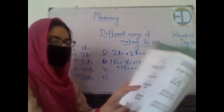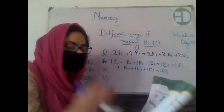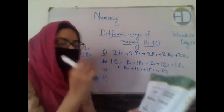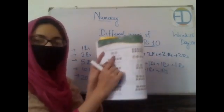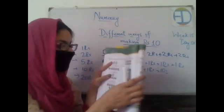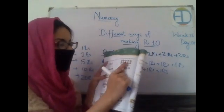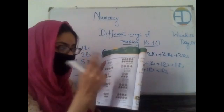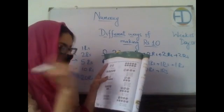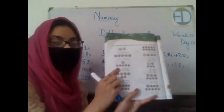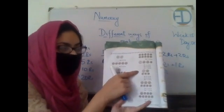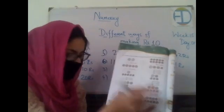Please open your book to page 72. The topic says: in how many different ways can we use coins to make rupees 10? Let's review what we've done: two five-rupee coins; five one-rupee coins; ten one-rupee coins; one five-rupee coin with two two-rupee coins and one one-rupee coin; one five-rupee coin and five one-rupee coins; one five-rupee coin, one two-rupee coin, and three one-rupee coins.